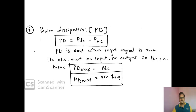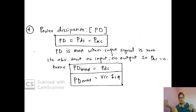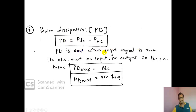Power dissipation is maximum when the input signal is zero. If there is no input signal — the controlling or modulating signal — there is no controlled output, so PAC is zero. When PAC is absent, PD = PDC = VCC × ICQ. So power dissipation maximum equals VCC × ICQ.